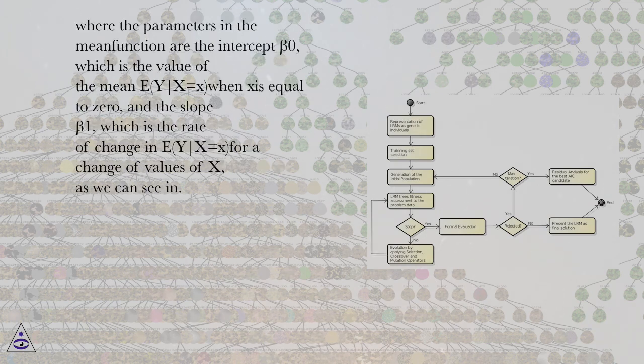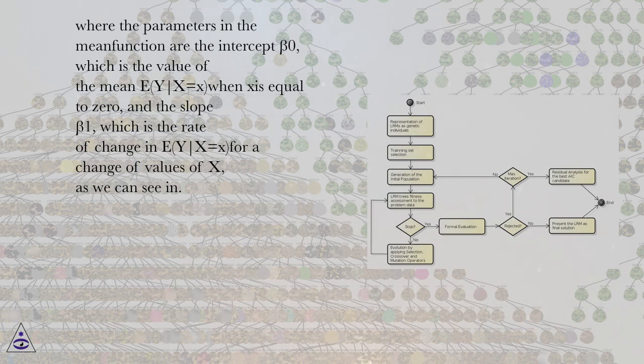Where the parameters in the mean function are the intercept beta 0, which is the value of the mean E[Y|X=x] when Xi is equal to 0, and the slope beta 1, which is the rate of change in E[Y|X=x] for a change of values of X, as we can see in.